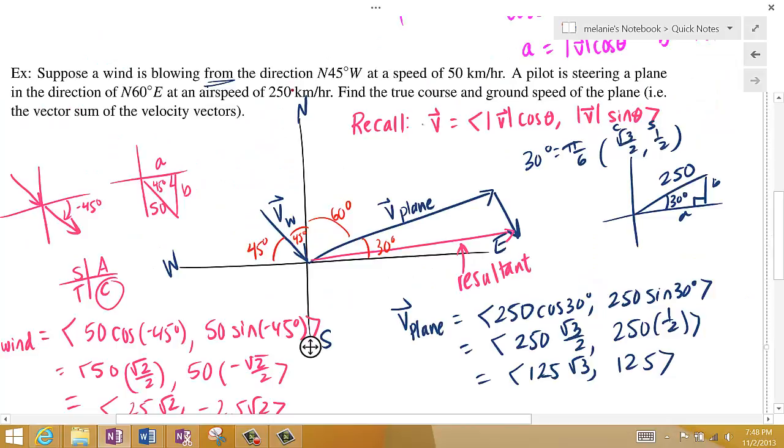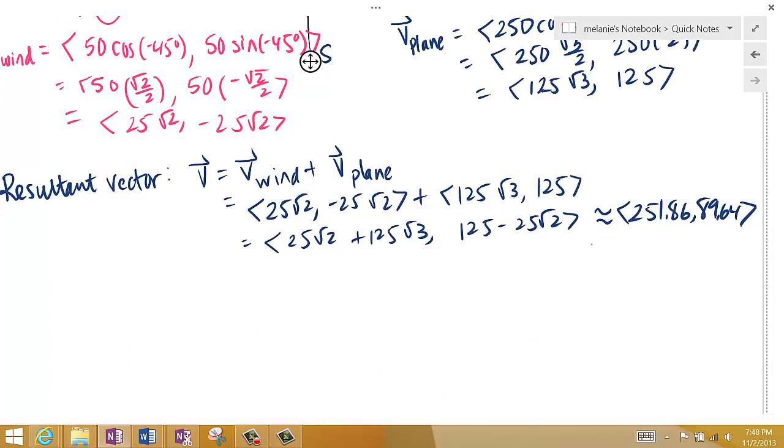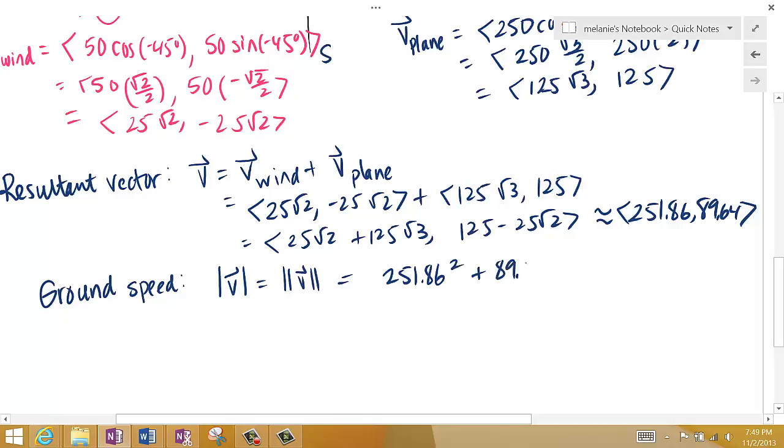Going back to the question. Find the true course and ground speed of the plane. How do I find the ground speed? I know what the vector looks like but to find the ground speed I'm going to need the magnitude of that vector. Remember I can also write magnitude with double bars. Okay, so this is going to be 251.86 squared plus 89.64 squared and I take a root of that. And looks like that turns out to be 267.34 kilometers per hour, and that's the ground speed.